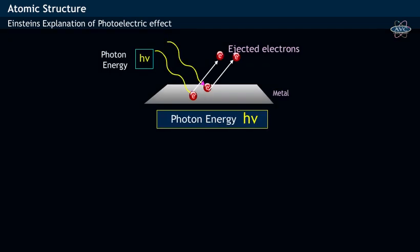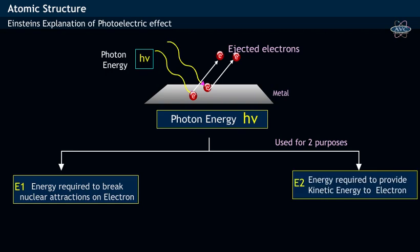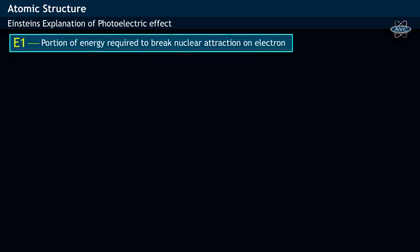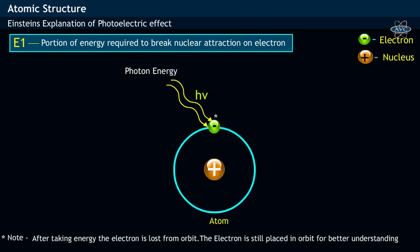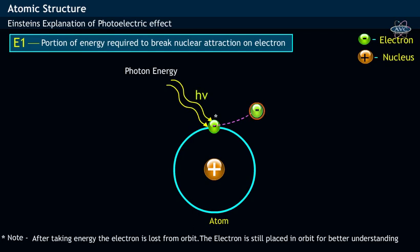Here, the photon energy h nu is used for two purposes. Some portion of photon energy h nu is utilized for removing the electron from the metal surface with zero velocity by overcoming the nuclear forces of attraction. This removed electron is called photoelectron.